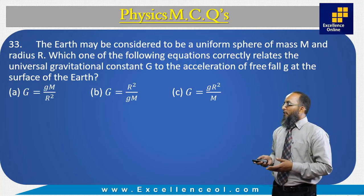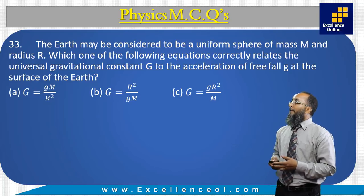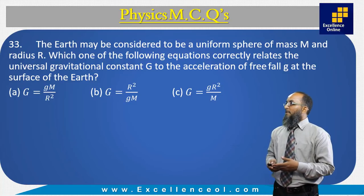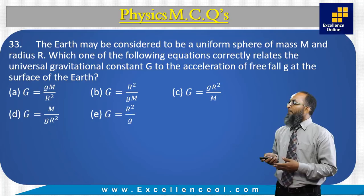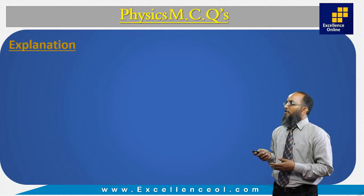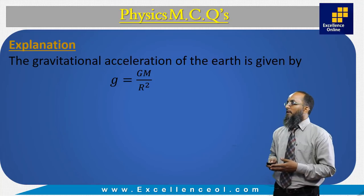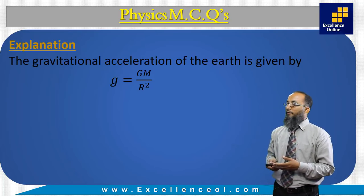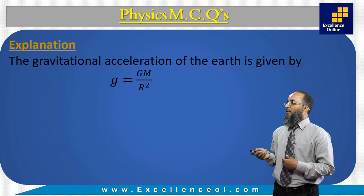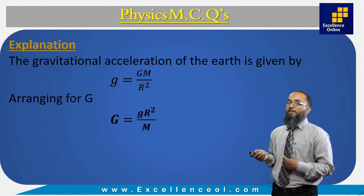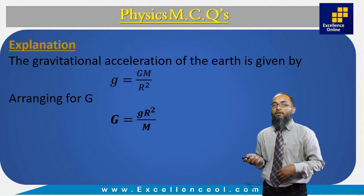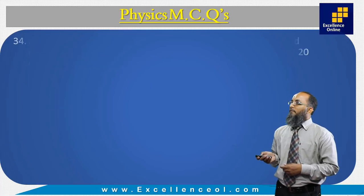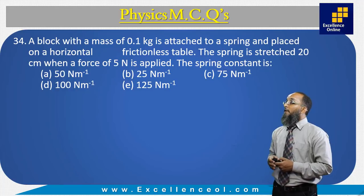The Earth may be considered a uniform sphere of mass M and radius R. Which equation correctly relates the universal gravitational constant G to the acceleration of free fall g at the surface? The gravitational acceleration is g = GM/R². Rearranging for G gives G = gR²/M. The correct answer is C: G = gR²/M.